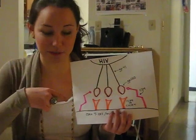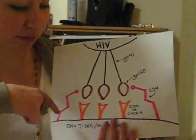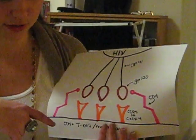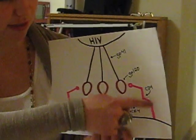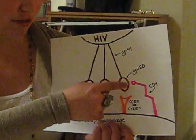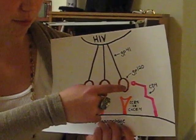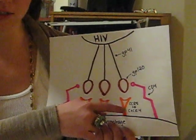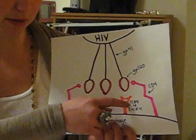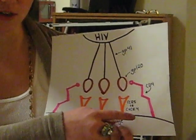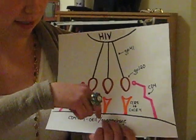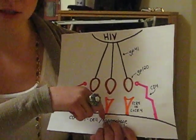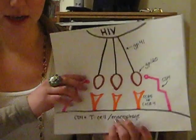The HIV life cycle begins with attachment, which can only occur with certain cells like T lymphocytes or macrophages that have the CD4 receptor that can attach to glycoprotein 120. GP120 also attaches to co-receptors like CCR5 or CXCR4, which then allow GP41 to come down into the cell membrane and pull the entire HIV virus into the cell.